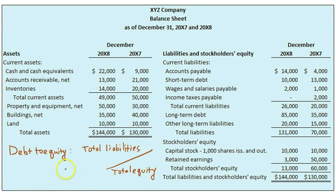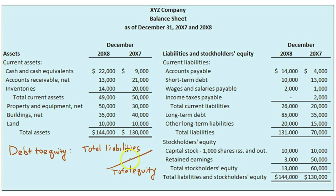Assets are equal to liabilities plus equity, so seeing these relative proportions helps us understand how the assets were funded. If total liabilities are greater than total equity, the debt-to-equity ratio will be greater than one, indicating that more than 50% of the company's assets have been funded by debt. If this ratio grows larger every year, the company is becoming more highly leveraged by debt.